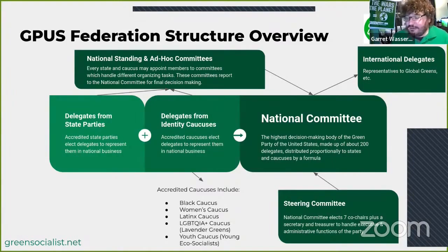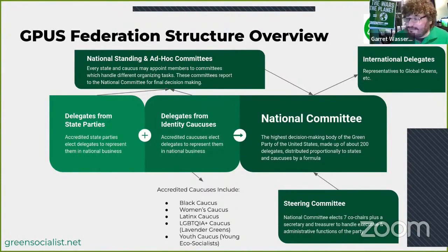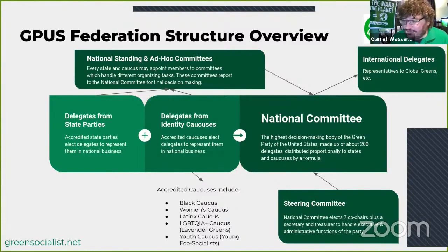Between making big decisions, there's administrative work, so the national committee elects from its pool of delegates a steering committee. That steering committee handles mostly administrative tasks — ensuring proposals are handled correctly, delegates are updated, votes are cast and counted, and overseeing staff. I'm a national co-chair; I was elected last July to be a national steering committee member, which has been an interesting experience seeing how the party works at the national level.